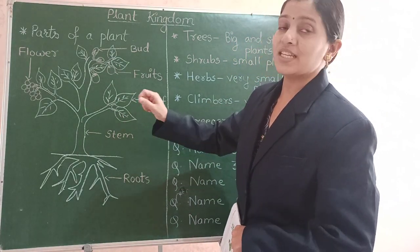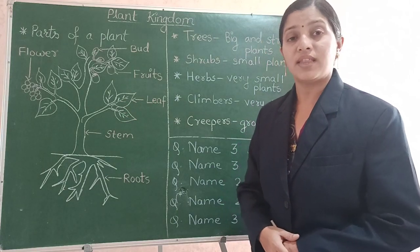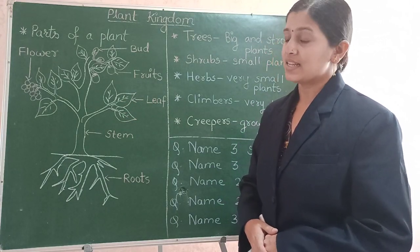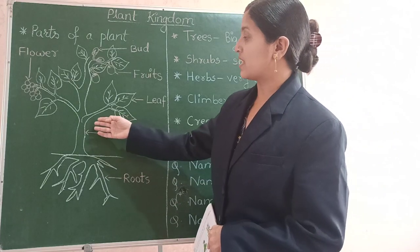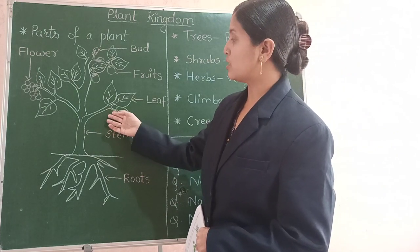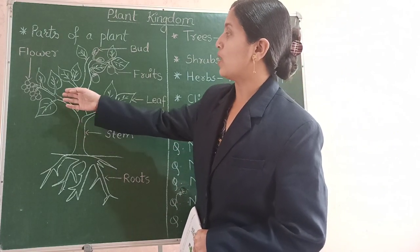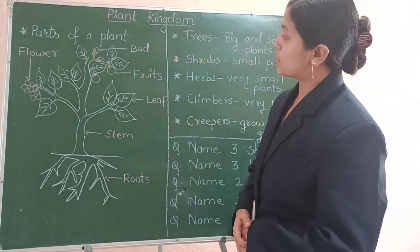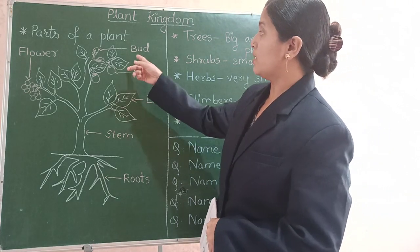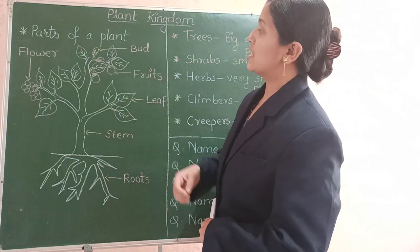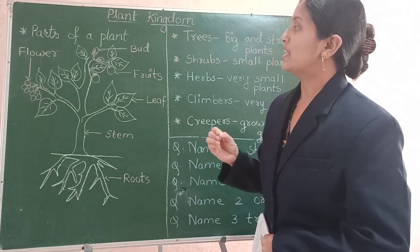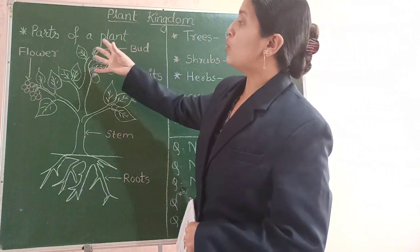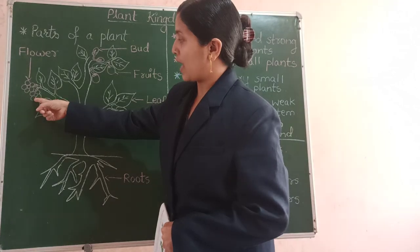Food is prepared in the leaves with the help of air, water and sunlight. Then the stem takes this food and energy to other parts of the plant. The next part is a bud. A bud is very tiny. When the bud blooms, it becomes a flower.